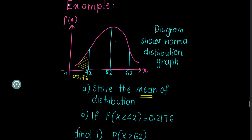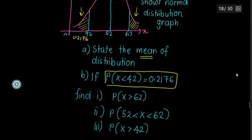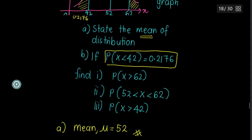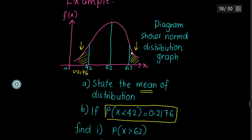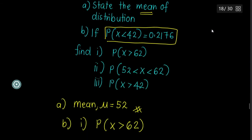Usually whatever is on the left side will be the same as the right-hand side — same value, because the graph is symmetrical. So the values of the left and right will always be the same. If P(X < 42) = 0.2176, find P(X > 62). Since both are on the same side symmetrically, P(X > 62) is also equal to 0.2176. No calculation needed.